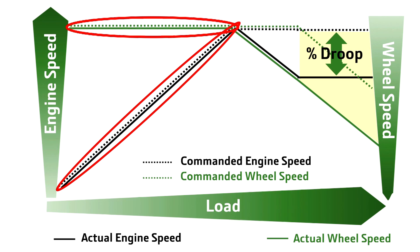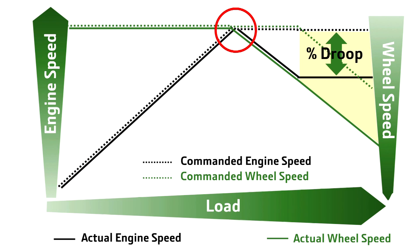As the load on the tractor increases, the tractor will compensate by increasing the engine speed and downshifting the transmission while maintaining the constant commanded wheel speed. The engine and transmission will continue to shift down and throttle up as the load continues to increase until the engine reaches the maximum engine speed.